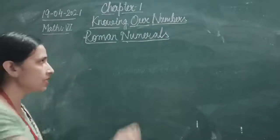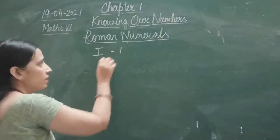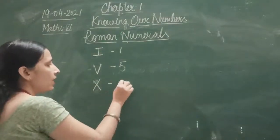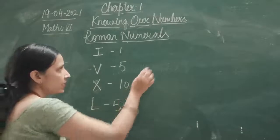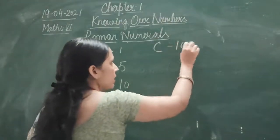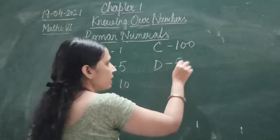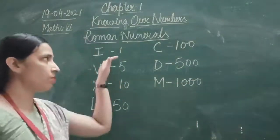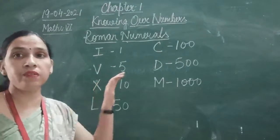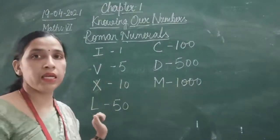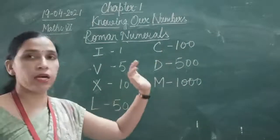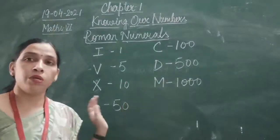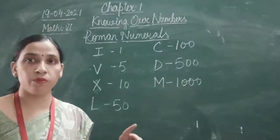I stands for 1, V stands for 5, X stands for 10, L stands for 50, C stands for 100, D stands for 500, and M stands for 1000. Now, by using this, let's look at certain rules of Roman numerals.